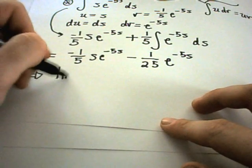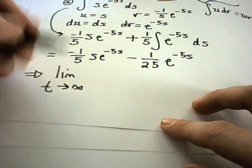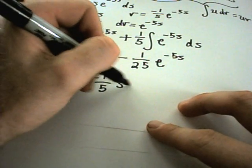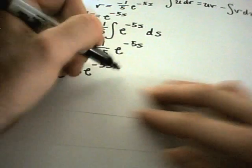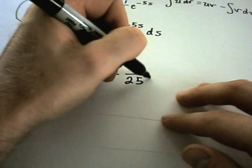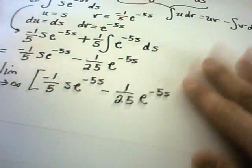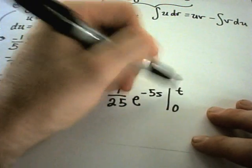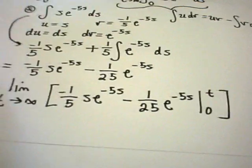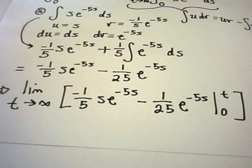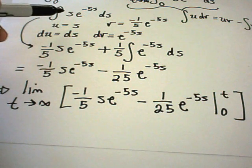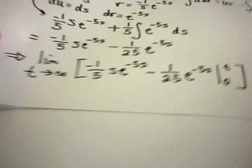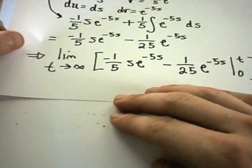I've got the limit as t goes to infinity of [−(1/5)·s·e^(−5s) − (1/25)·e^(−5s)] evaluated from 0 to t. Hopefully so far so good — a little tricky, since the integration itself can be tedious. On this one we had to do integration by parts. Now let's plug our limits of integration in and see what happens.